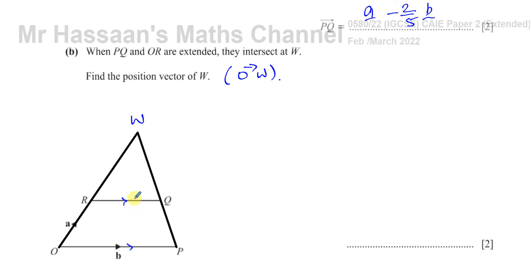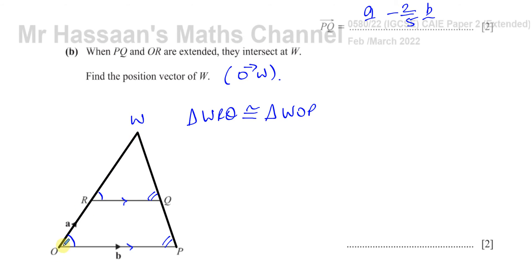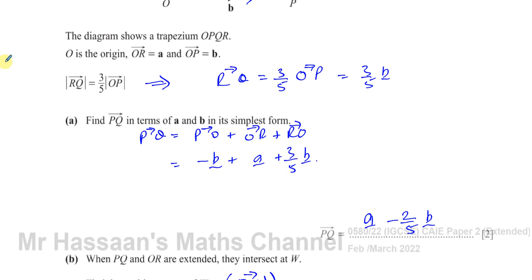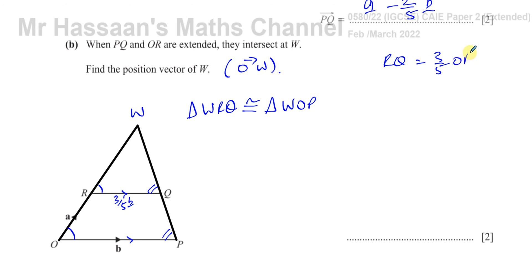We need to find the vector from O to W, and it's going to be something times a — more than one a. Because this line is parallel to that one, we have equal angles, so triangle WRQ is similar to triangle WOP. The ratio of RQ to OP is three to five.